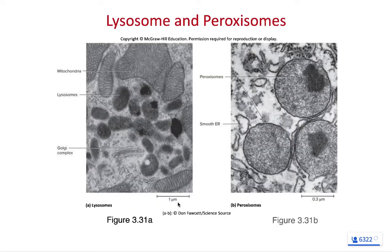Visually, lysosomes and peroxisomes look almost identical on the electron micrograph — they're little circles with a membrane around them. In lab, they're colored different colors: the peroxisome is roughly a periwinkle gray-purple, and the lysosome is colored yellow. Most cell models use different colors because structurally they look nearly identical to each other.